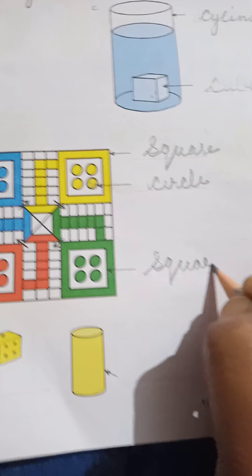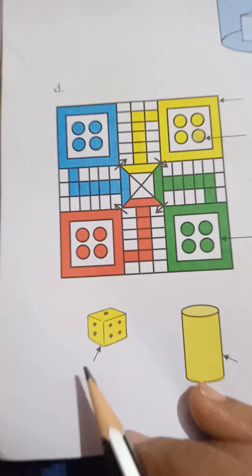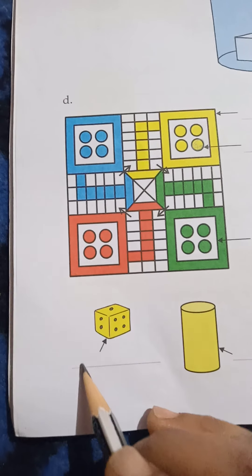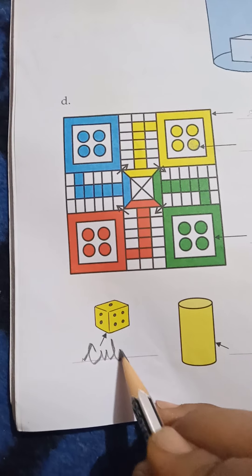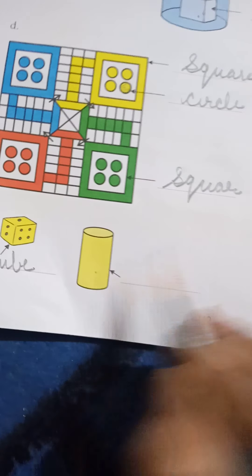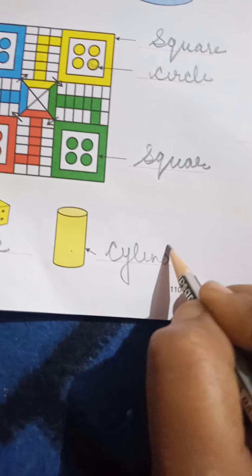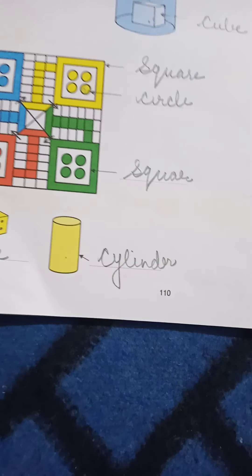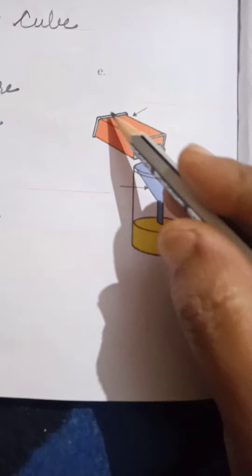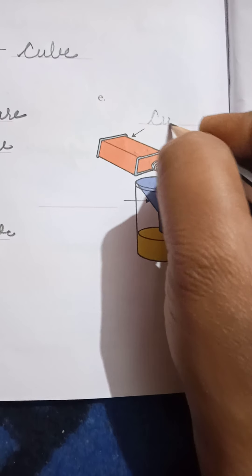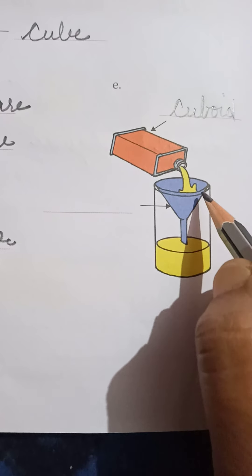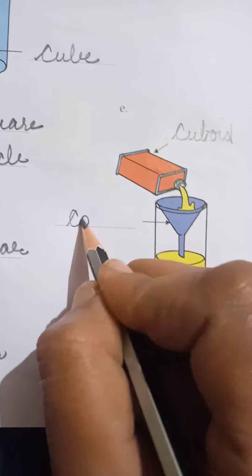Now come to the next picture. What is this? This is a cube — C-U-B-E, cube. What is this? This is a cylinder — C-Y-L-I-N-D-E-R, cylinder. What is this? This is a cuboid — C-U-B-O-I-D, cuboid. What is this? This is a cone — C-O-N-E, cone.